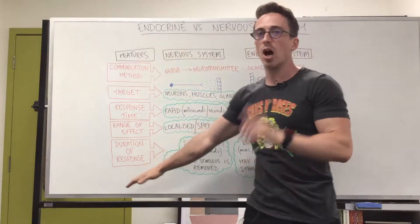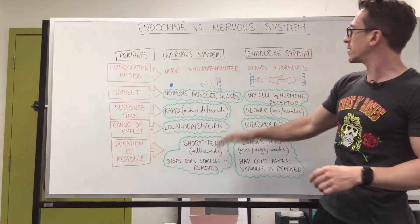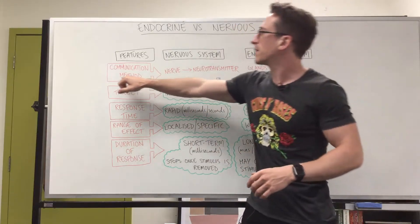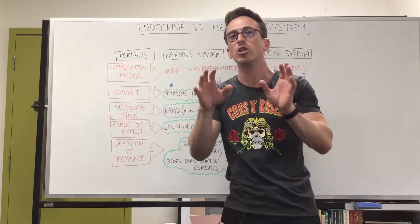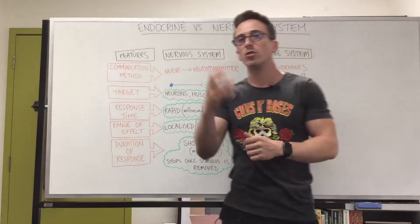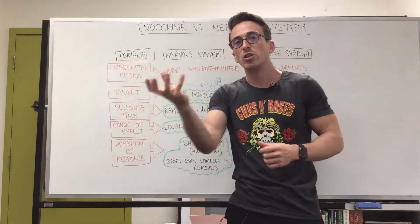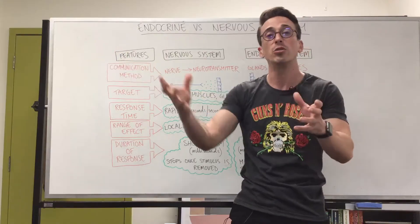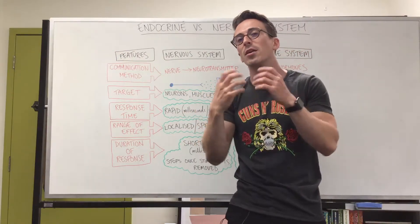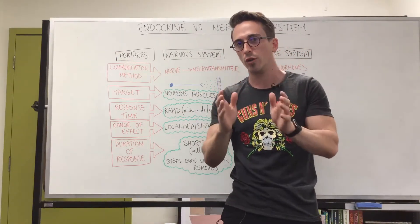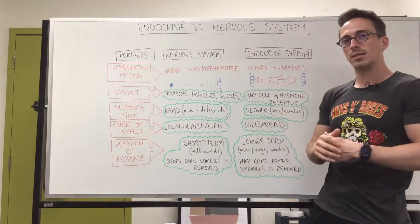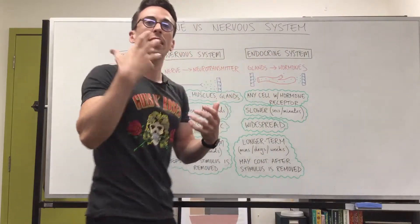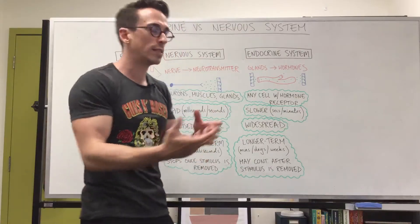We're going to look at some features of both the nervous system and endocrine system and see what's similar and what's different. If we look at the method of communication, the nervous system uses nerves or neurons, and these release neurotransmitters — chemicals released by neurons. The endocrine system uses glands or cells, and the chemicals they release are called hormones.